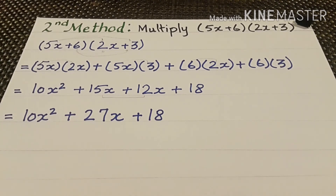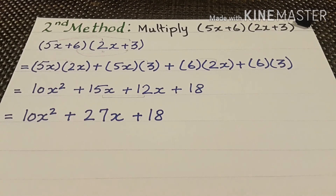We have understood the operations on polynomials — how to add, subtract, and multiply using both methods: method one by writing values vertically, and method two by writing them horizontally, then grouping the like values and adding or subtracting to get the answer. Practice for a clear concept and better learning. Thank you.